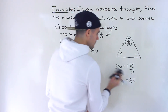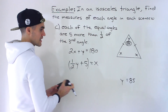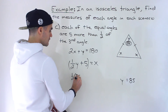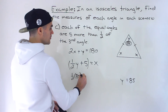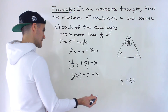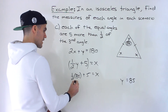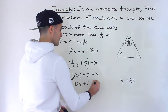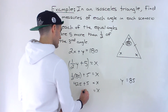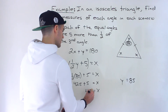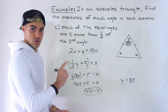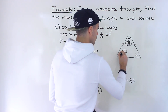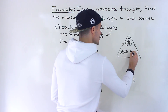Plugging y equals 85 into x equals one half times 85 plus 5: one half of 85 gives 42.5, plus 5 gives x equals 47.5. So each of the equal angles is 47.5 degrees.